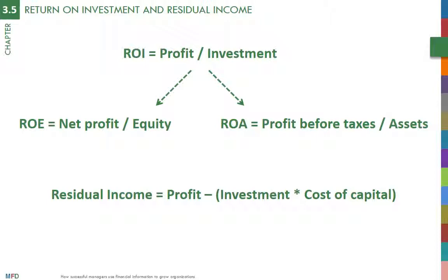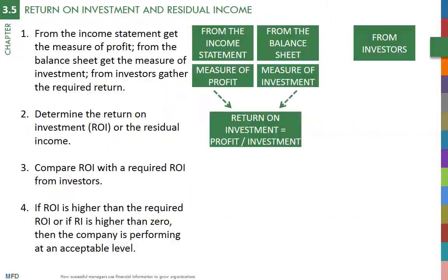The cost of capital is usually estimated as the returns that the investment would have earned if it had been invested in similar companies. By investing in a specific company, shareholders give up the option of investing in this second-best alternative. The cost of capital is therefore how much an investor would have made if he had invested his money elsewhere.